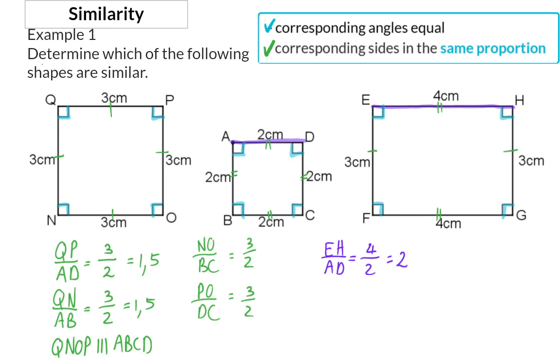If I now have a look at side EF over side AB, you will see that this ratio is 1.5. So in this case the corresponding sides are not in the same proportion. So we can make the conclusion that square ABCD is not similar to rectangle EFGH.